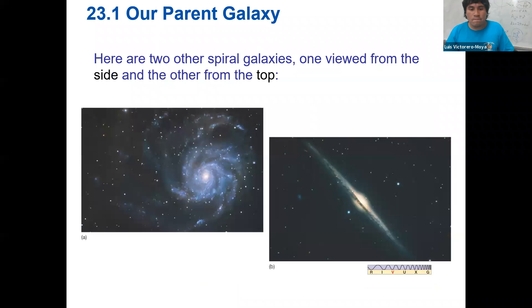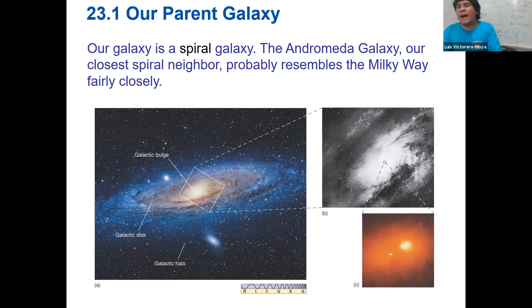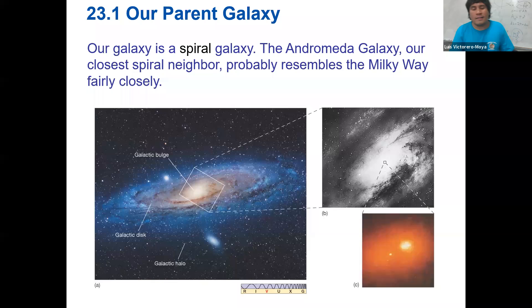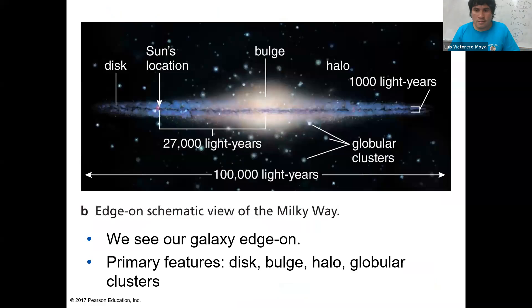That gives you an idea of astronomical distances. There are a lot of pictures here. The Milky Way doesn't look like a pure spiral galaxy. We thought it was, but now by looking at the structure of the arms and the galactic center from different perspectives, we think it may be more of a spiral barred galaxy.